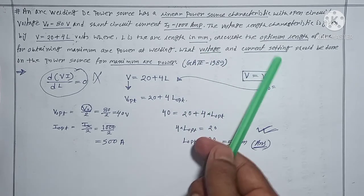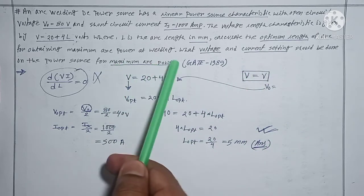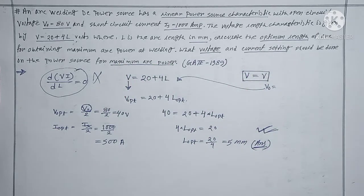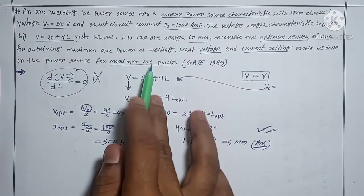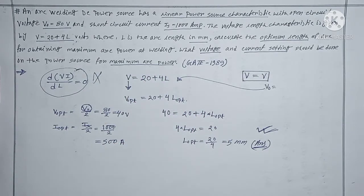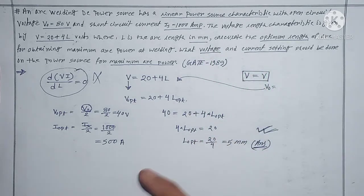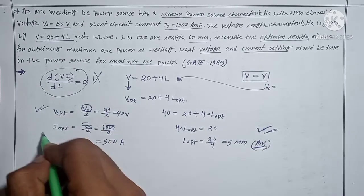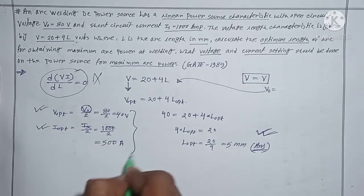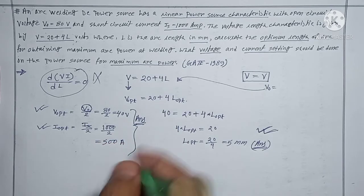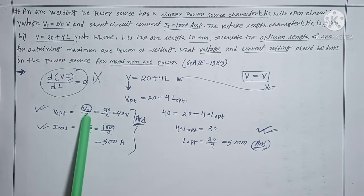Next, we have to find the voltage and current setting for maximum arc power. To get maximum power, voltage and current should be optimum — not simply maximum. The optimum voltage and optimum current are already found. So the answer is: optimum voltage = open circuit voltage / 2, and optimum current = short circuit current / 2.